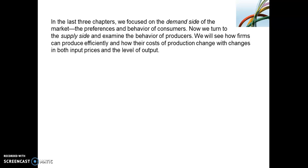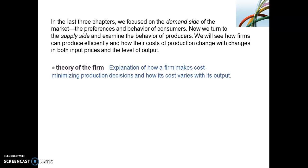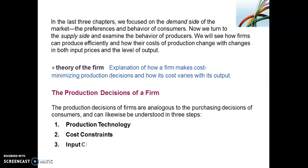The theory of the firm describes how cost-minimizing decisions are made by the firm and how cost varies with output. When we speak about cost-minimizing decisions, we are again thinking about an optimization-type problem, because ultimately firms want to maximize profits. In the same way that we studied consumer behaviour — first understanding consumer preferences, then budget constraints, and then how they choose a combination given those constraints — so that they could ultimately maximize utility.